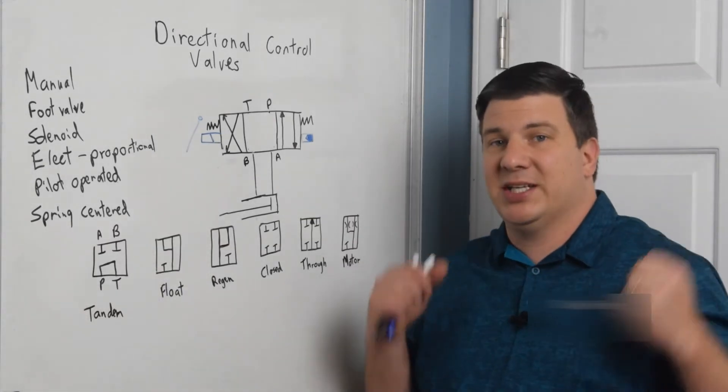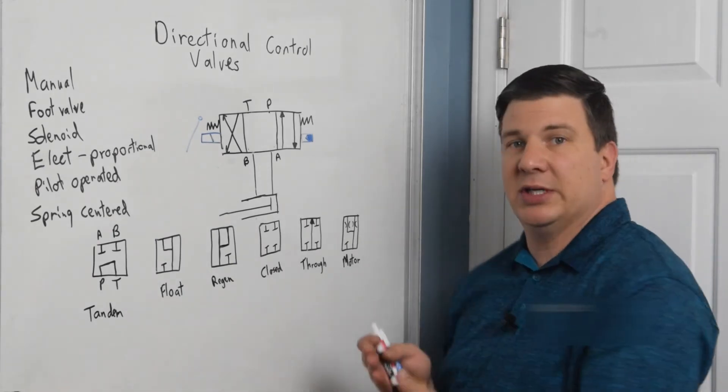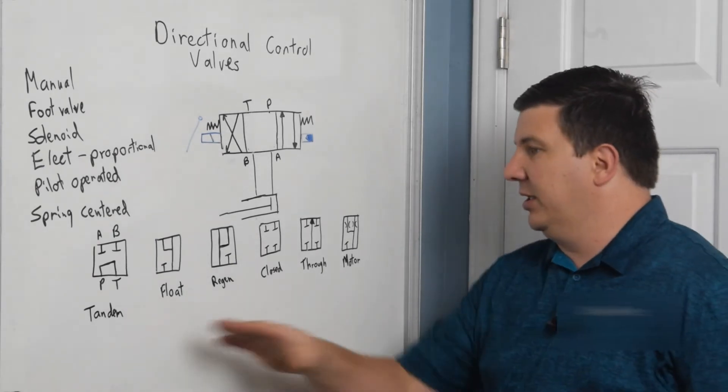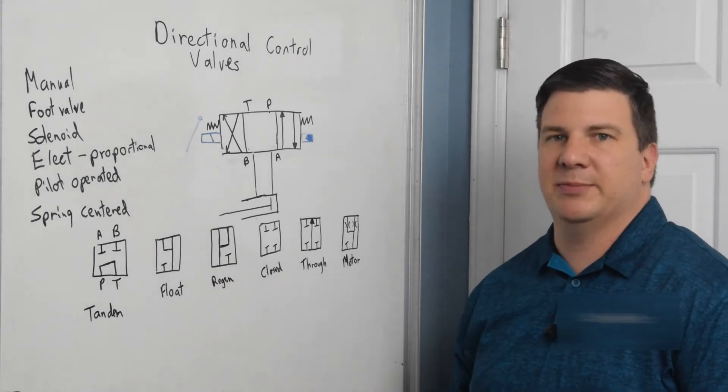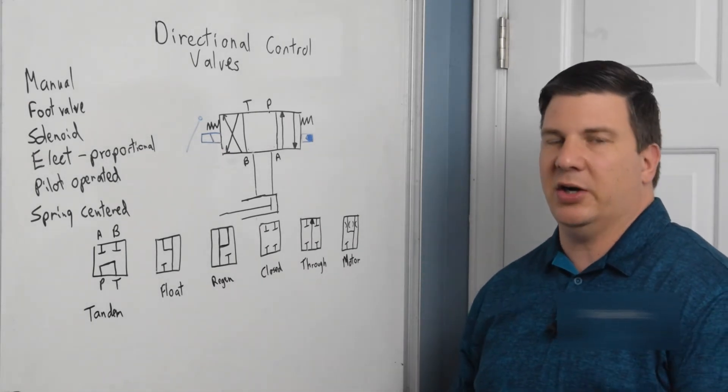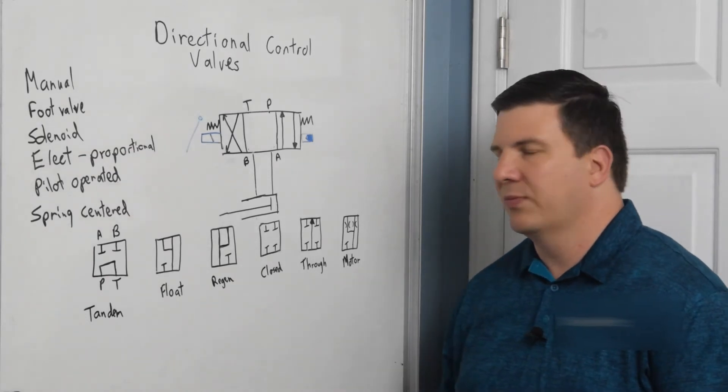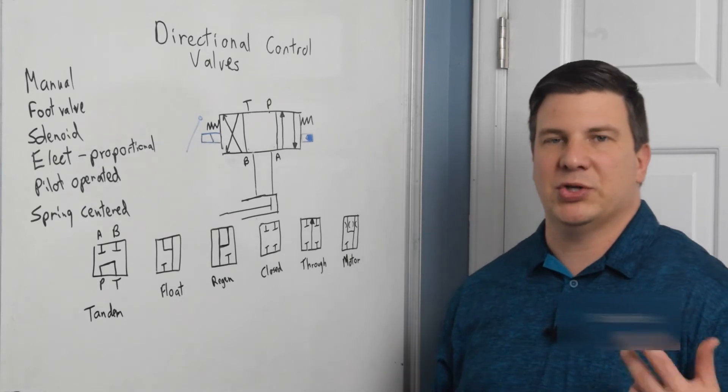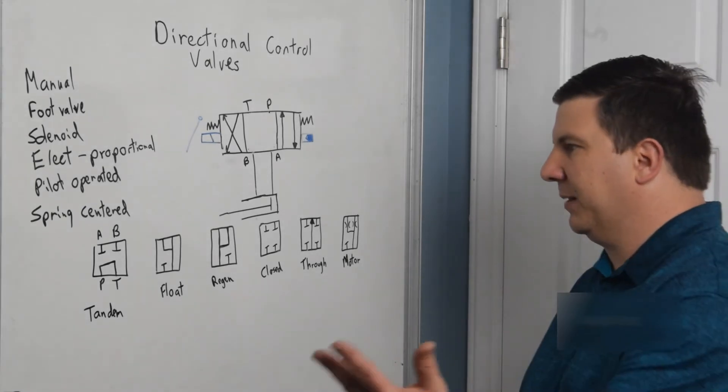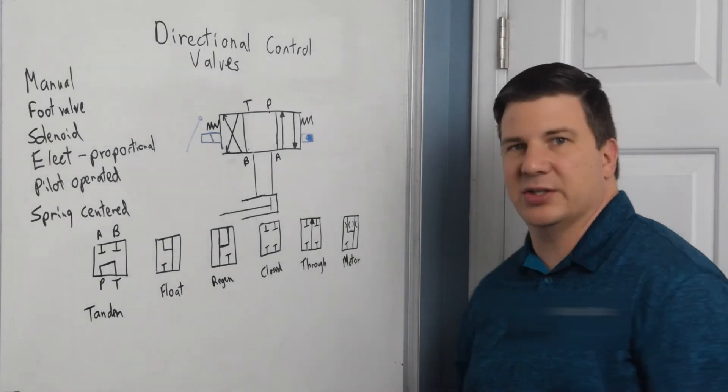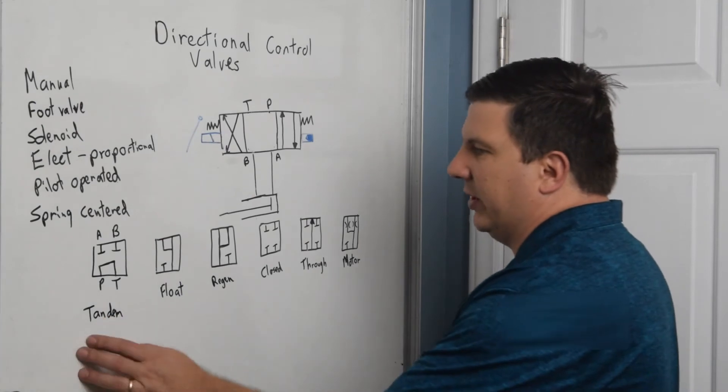So let's talk about the center position now. Now you see that magically there just appeared all this stuff on here. And basically these are like the six most common ways to do a center. There are some other customized ones, like you can get like pressure to A always and B to tank always. Any combination, there's tons of different opportunities.